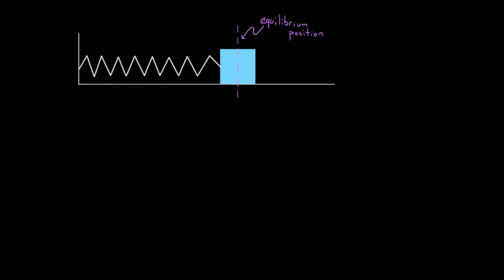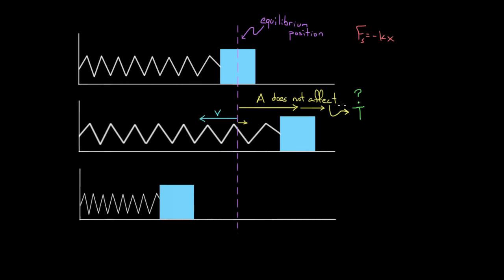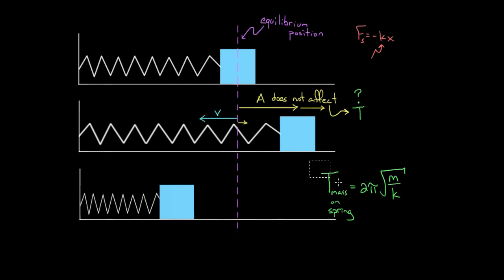So what does affect the period? Let me give you the formula. The period of a mass on a spring is equal to two pi times the square root of the mass connected to the spring divided by the spring constant K. That is the same spring constant from Hooke's Law and from the energy formula for a spring — the same spring constant throughout.